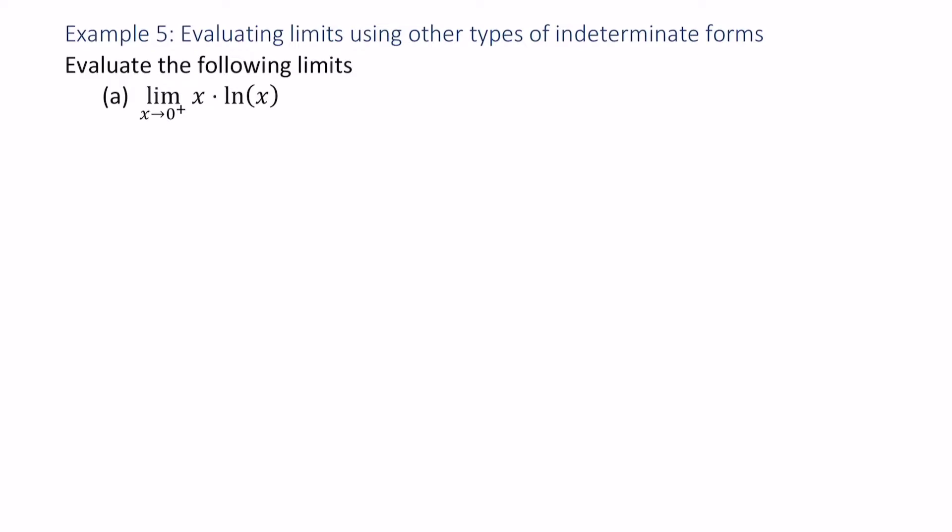Our first example is the limit as x approaches 0 from the right of x times the natural log of x. So let's look at these separately and see what kind of indeterminate form we have.